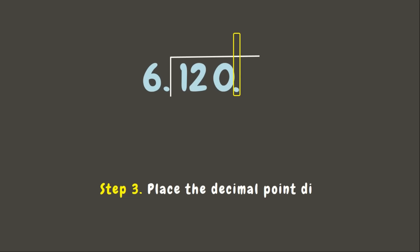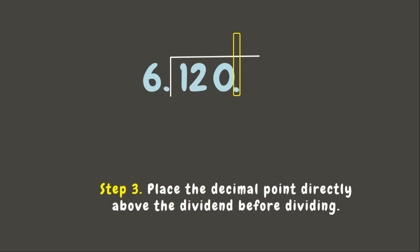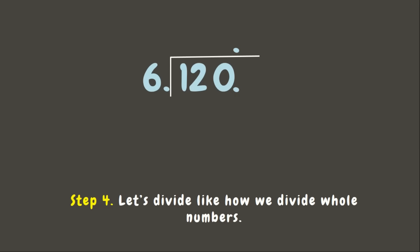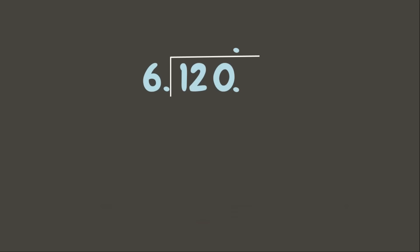Now we are dividing 120 by 6. The next step is to place the decimal point directly above the dividend before dividing. Now it's time to divide like whole numbers: 120 divided by 6. Since we cannot divide 1 by 6, let's take 12. 12 divided by 6 is 2.